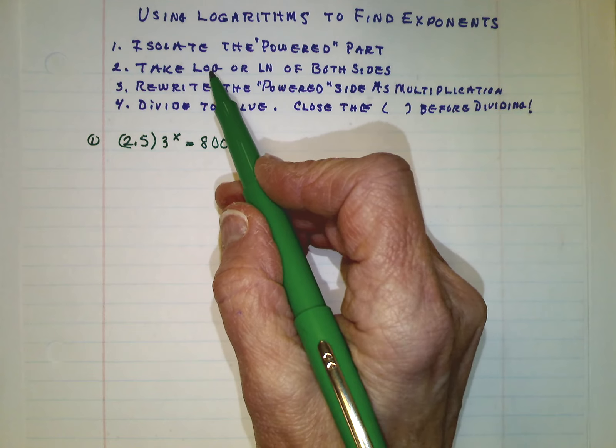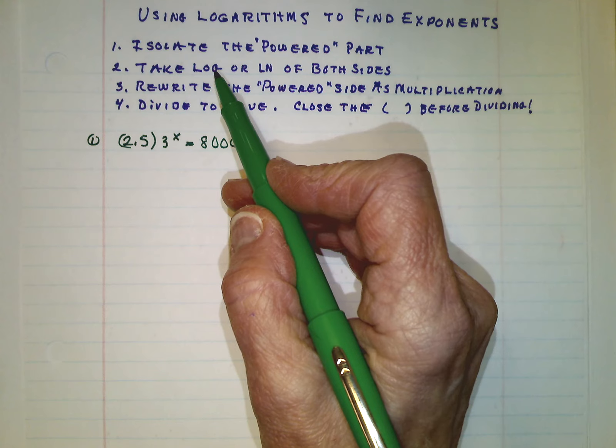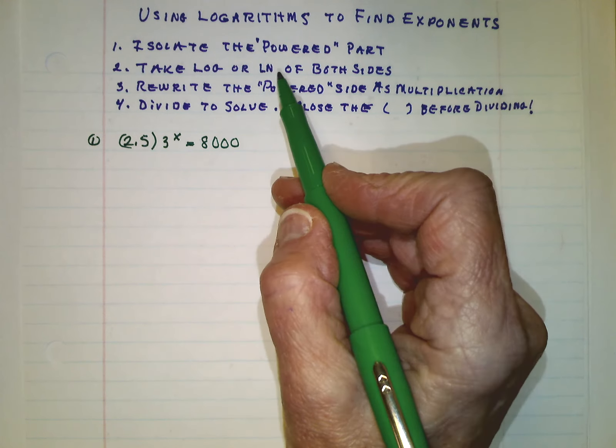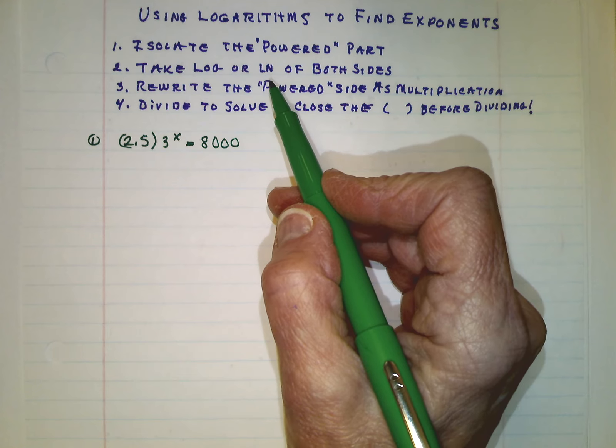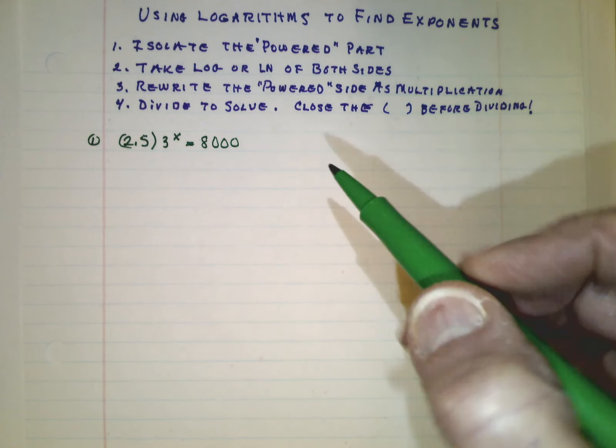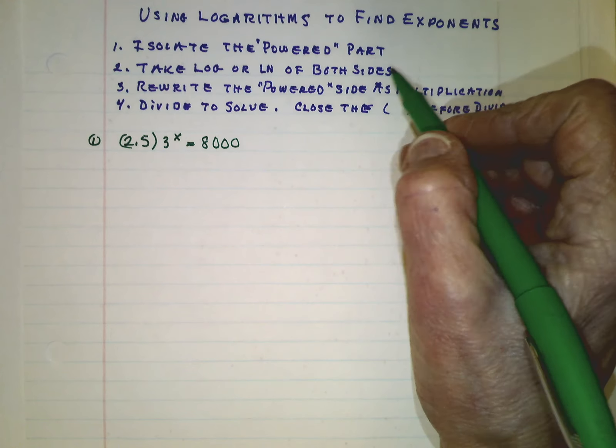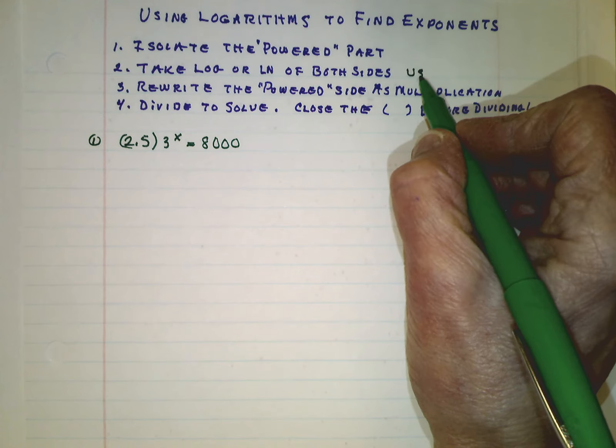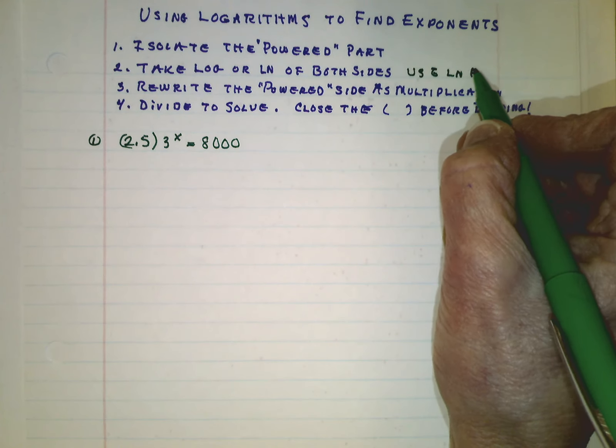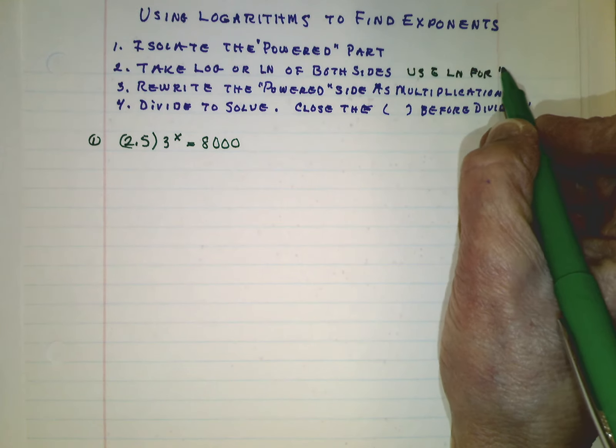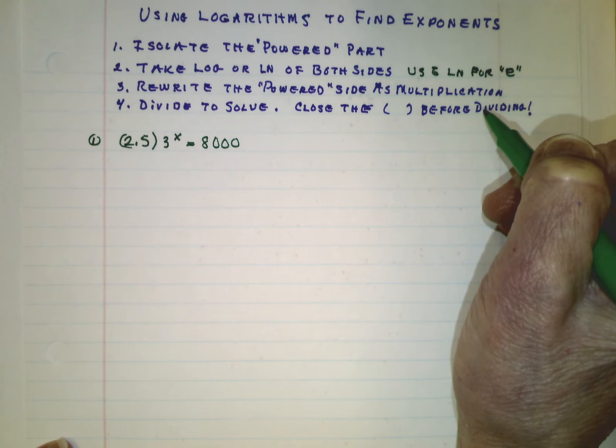But the calculator has a feature that it will change both sides of the equation into base 10, or if we use the ln key, change both sides into base e. Doesn't matter, you'll get the same answer. Now, if the problem already has an e written in it, definitely use the ln key for e. It'll make the problem so much easier.